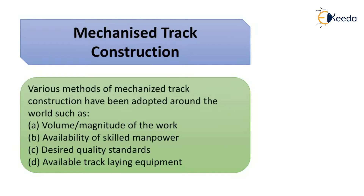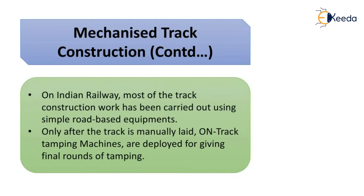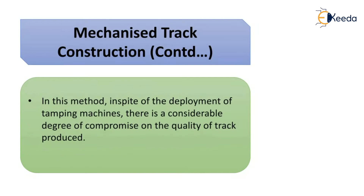Mechanized track construction: various methods are adopted around the world based on volume of work, availability of skilled manpower, desired quality standards, and available track laying equipment. On Indian railways, most track construction has been carried out using simple road-based equipment, with track tamping machines deployed only for the final rounds of tamping. Despite deployment of tamping machines, there is considerable compromise on the quality of the track produced.